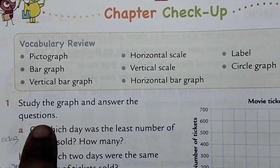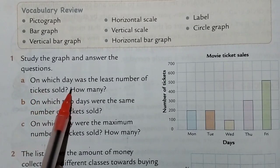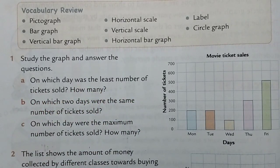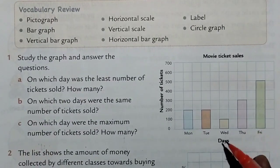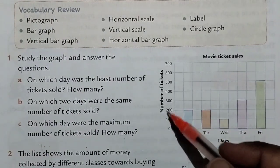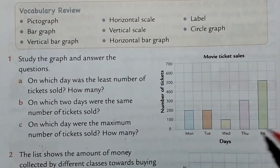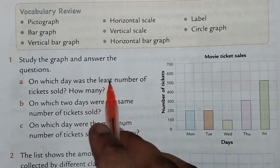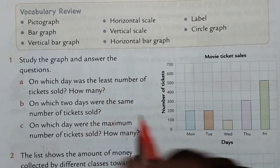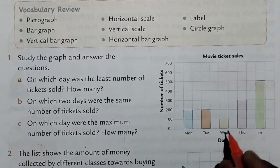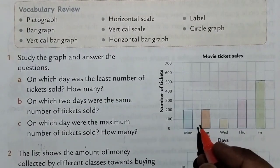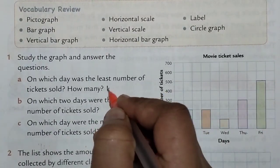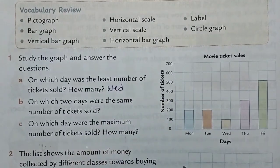Question number 1: Study the graph and answer the question. On which day was the least number of tickets sold? This is the number of days and this is the number of tickets. The smallest one is 100, so we have the least number. The answer is Wednesday, so here we have to write Wednesday.